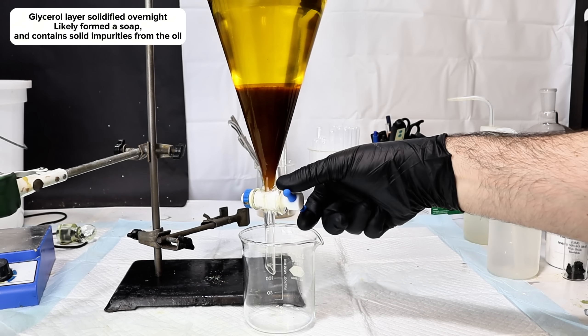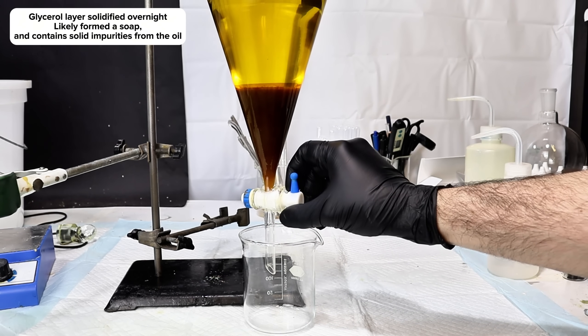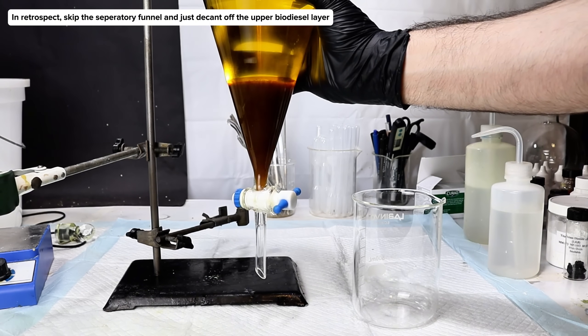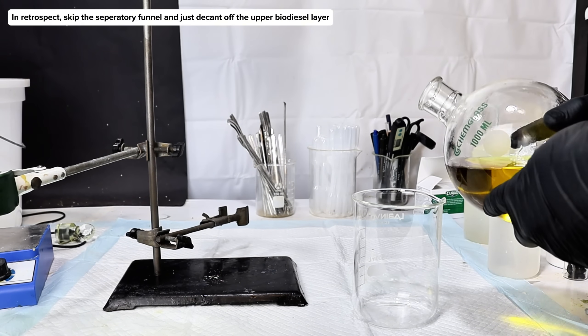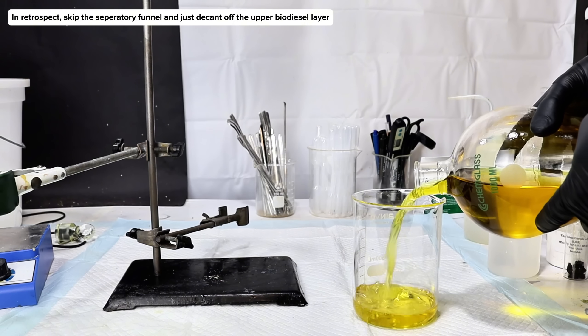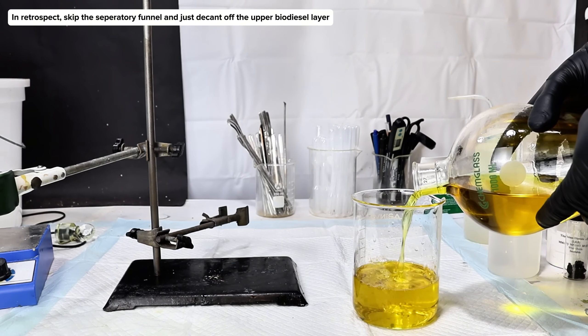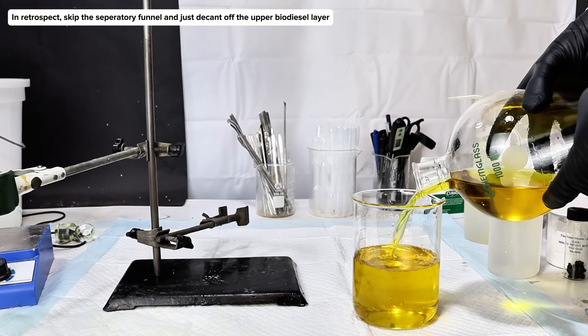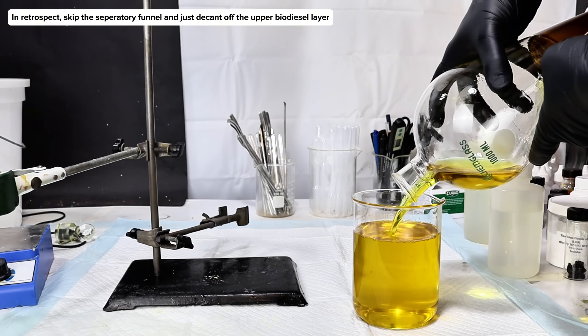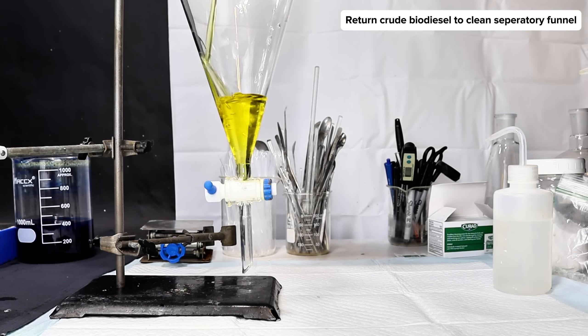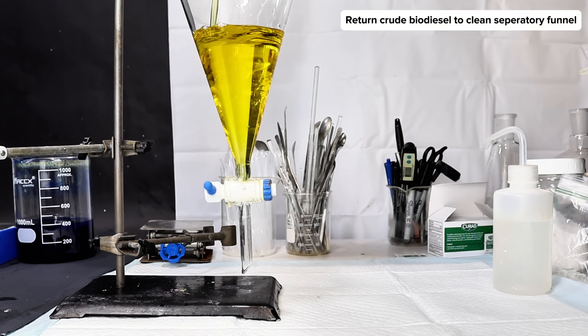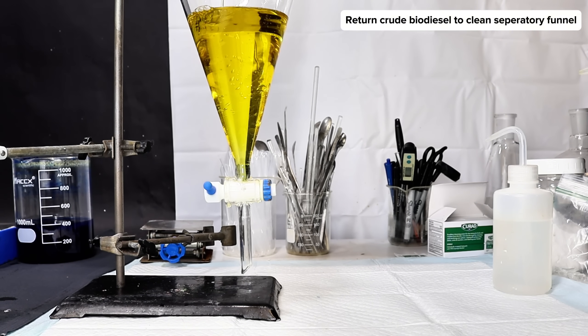I suspect this is mostly due to the fact that the glycerol layer likely contains all of the water-insoluble impurities that were in the oil. It's also probably due to the glycerol forming soap with any water that was hanging around and some unreacted triglycerides. Regardless, I went ahead and just decanted off my crude biodiesel layer and rinsed the glycerol soap mess out of my separatory funnel.